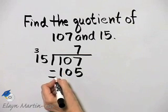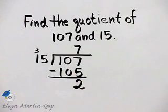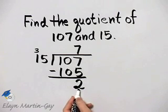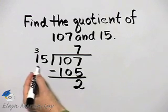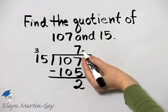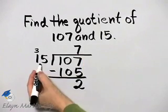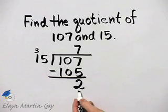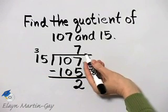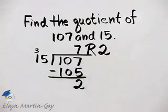Now you've got to pay careful attention to your difference. In this case, it's 2. Remember, if your difference is greater than this number, it means this should be increased. But since this difference is less than my divisor of 15, I'm okay. And my quotient is 7 remainder of 15.